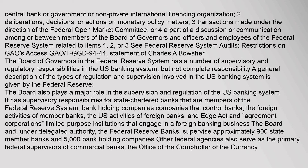The Board of Governors in the Federal Reserve System has a number of supervisory and regulatory responsibilities in the U.S. banking system, but not complete responsibility. The Board plays a major role in the supervision and regulation of the U.S. banking system. It has supervisory responsibilities for state-chartered banks that are members of the Federal Reserve System, bank holding companies, the foreign activities of member banks, the U.S. activities of foreign banks, and Edge Act and agreement corporations. The Board and the Federal Reserve Banks supervise approximately 900 state member banks and 5,000 bank holding companies.